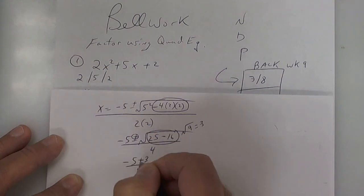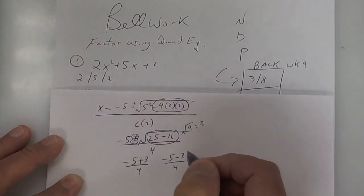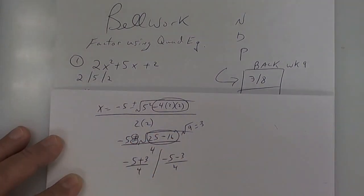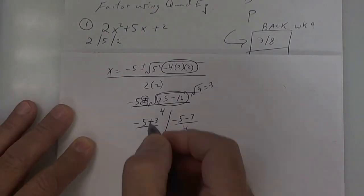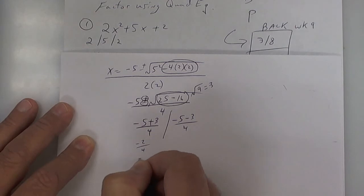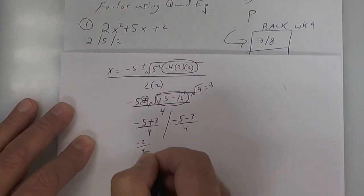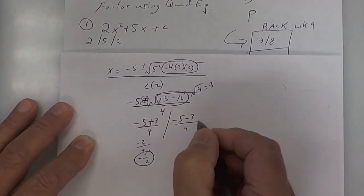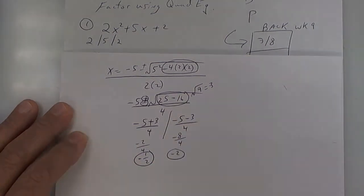There is your plus right here, and there is your minus right here. So you've got two different answers. In this one, you're going to get a negative 2 over 4, which reduces to a negative 1 half. That's one answer. On this one, you're going to get a negative 8 divided by 4, which is a negative 2. That's another answer.